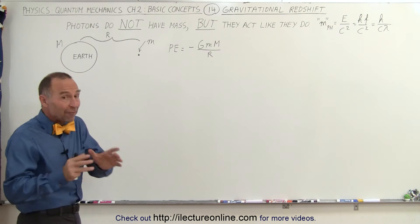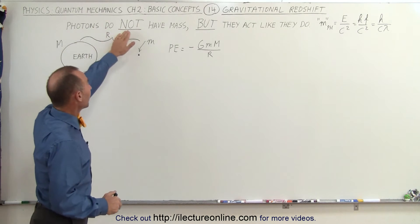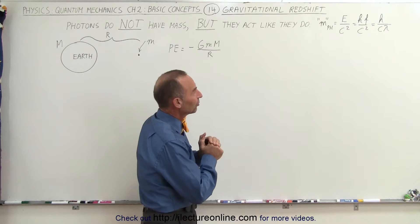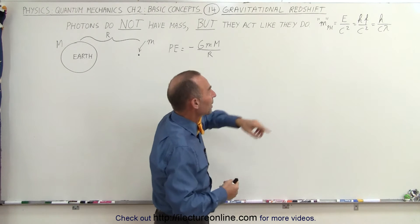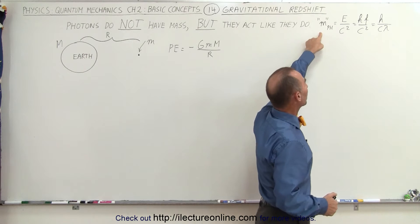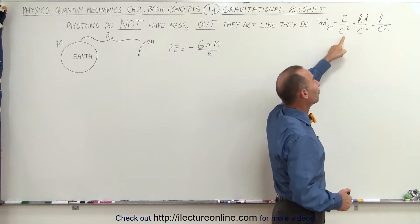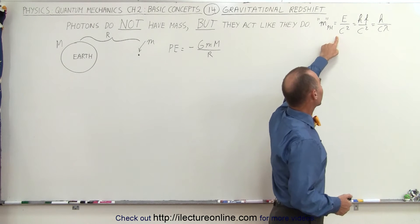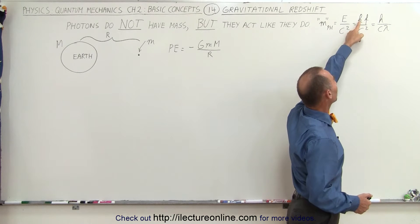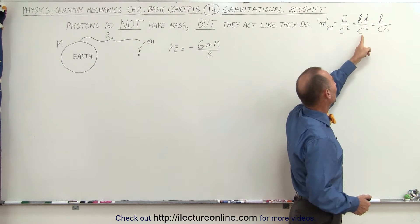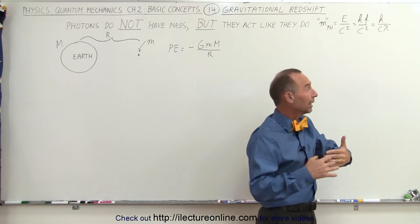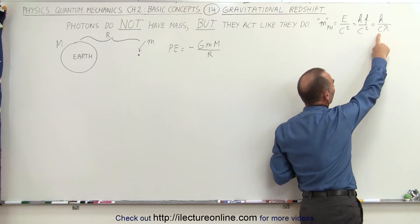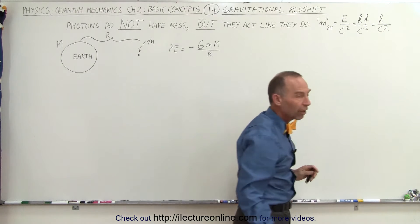We need to emphasize that photons do not have mass, but they do act like they do. The equivalent or apparent mass of a photon can be expressed as the energy of the photon divided by c squared — c being the speed of light — which can be written as Planck's constant times the frequency divided by c squared, or in terms of wavelength, Planck's constant divided by the speed of light times the wavelength.